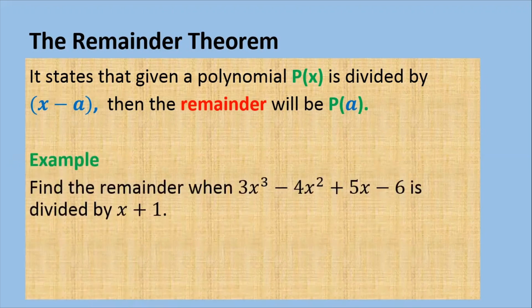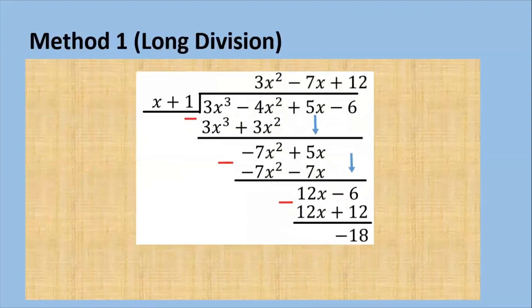Find the remainder when 3x cubed minus 4x squared plus 5x minus 6 is divided by x plus 1. We have done a few examples like this in the first video. We did a long division, so let's do a long division here to find the remainder. That will be 3x cubed minus 4x squared plus 5x minus 6 divided by x plus 1.